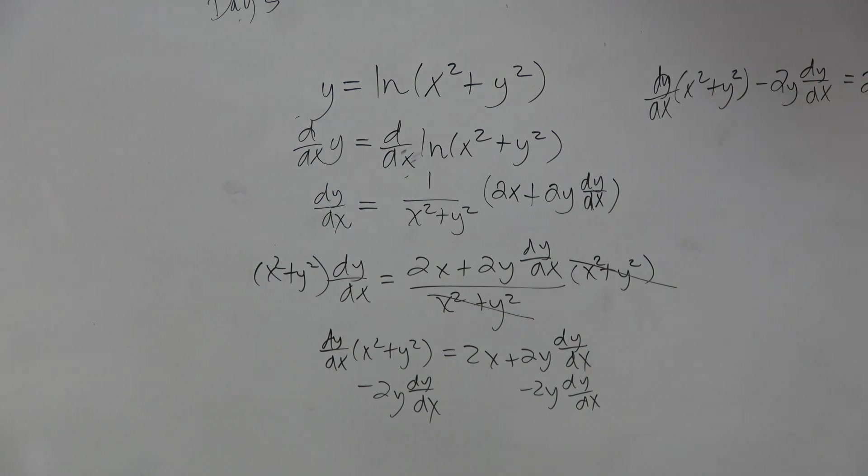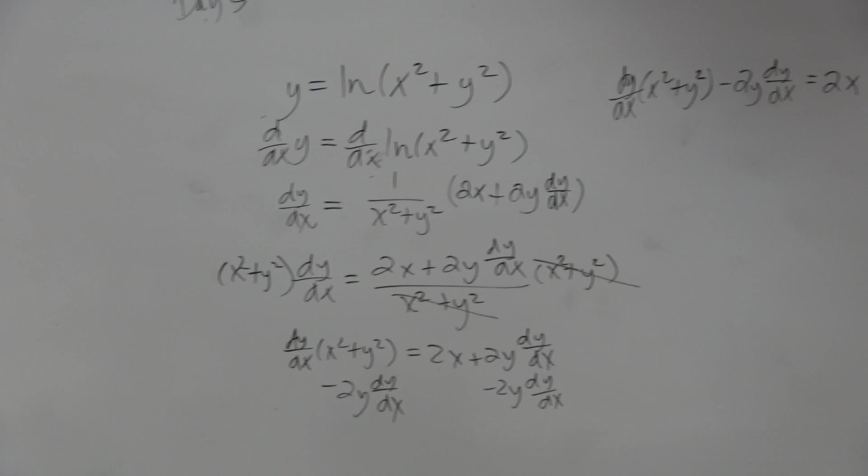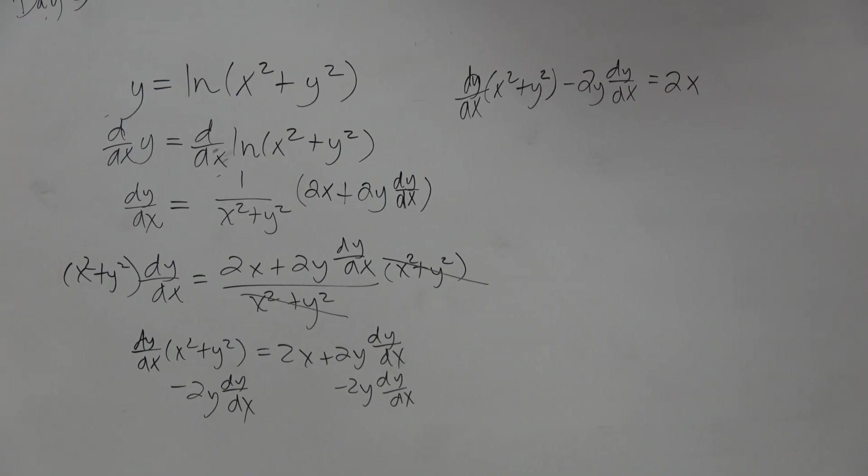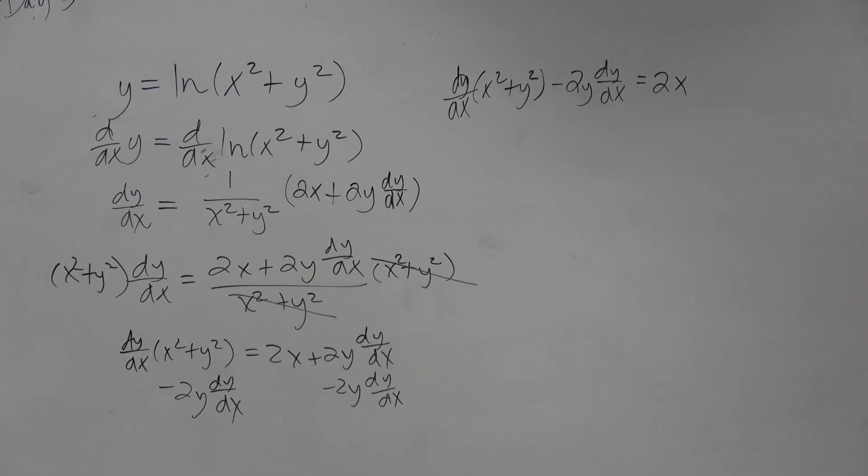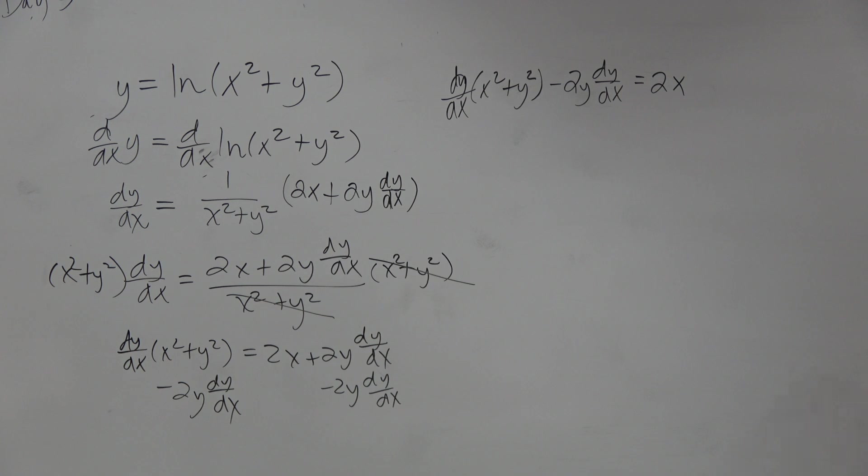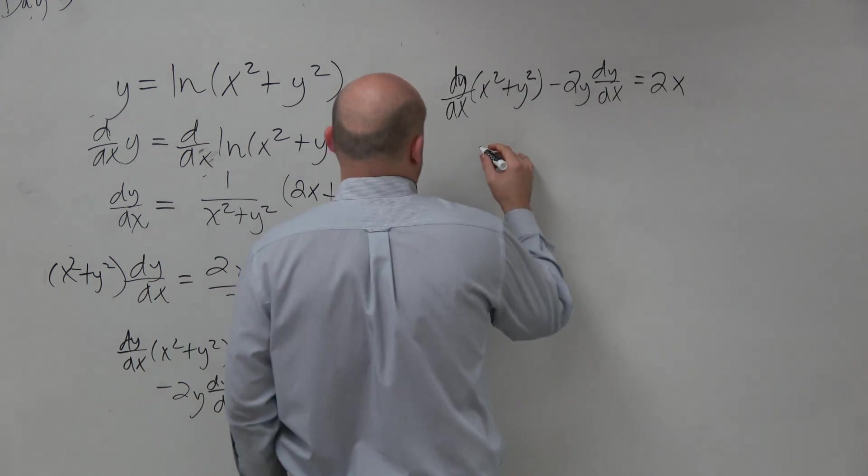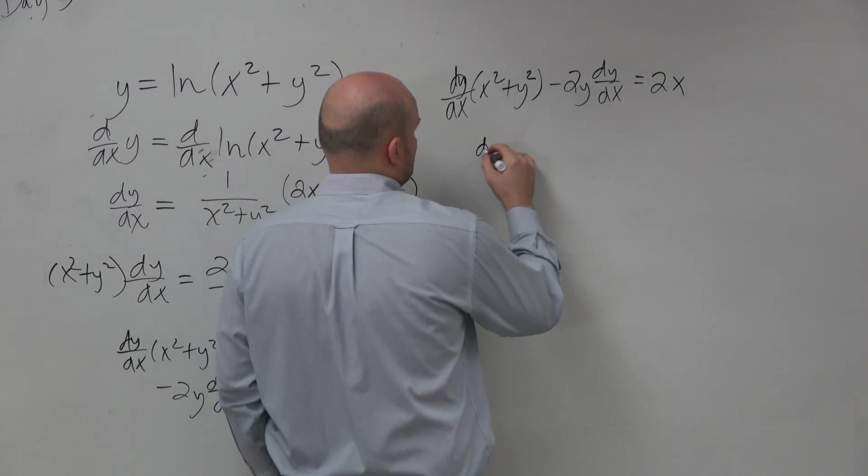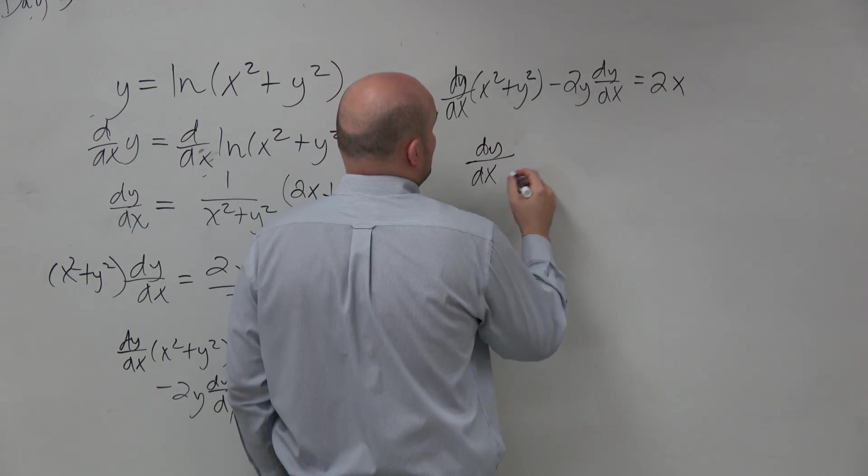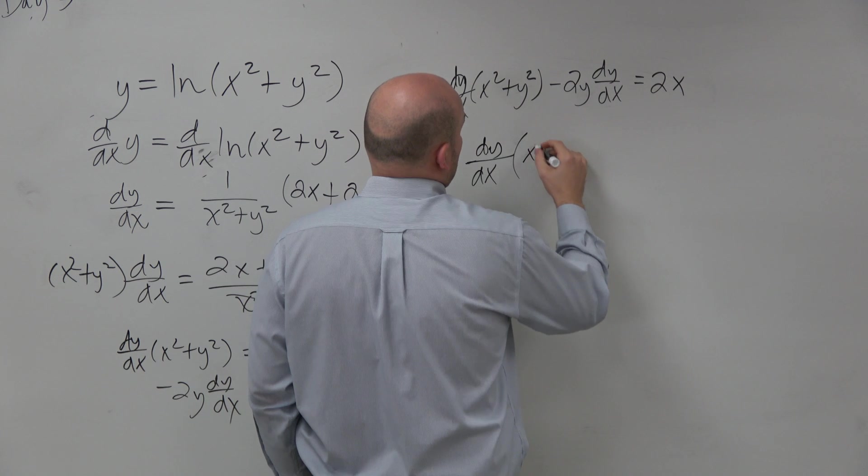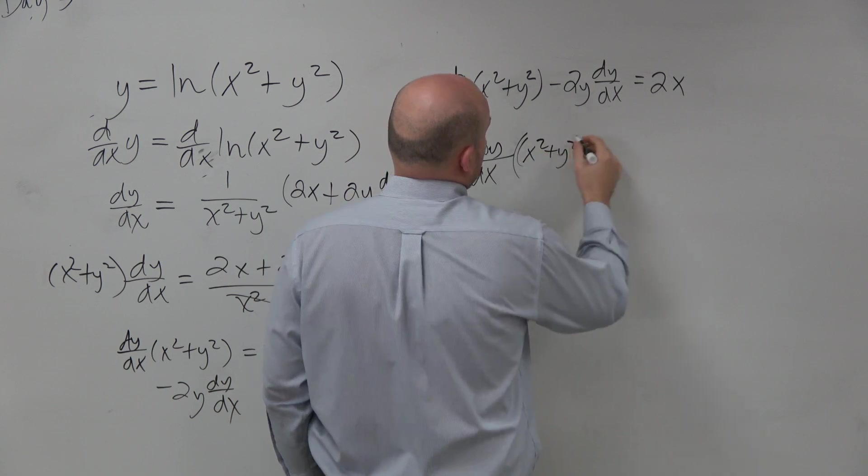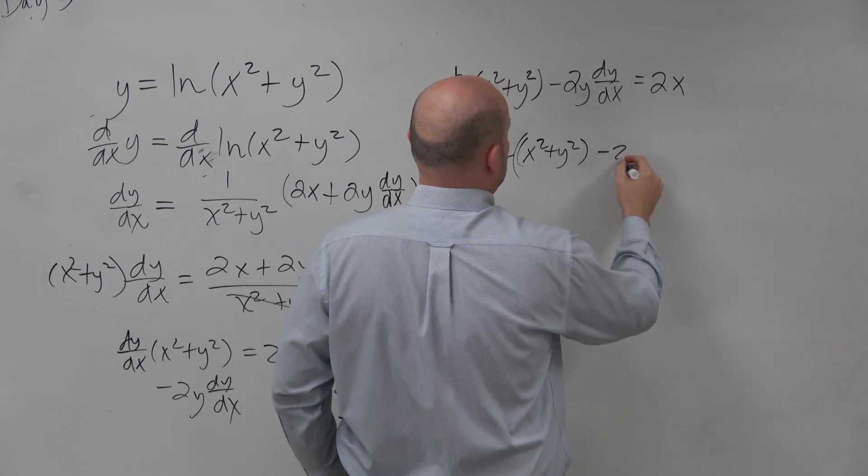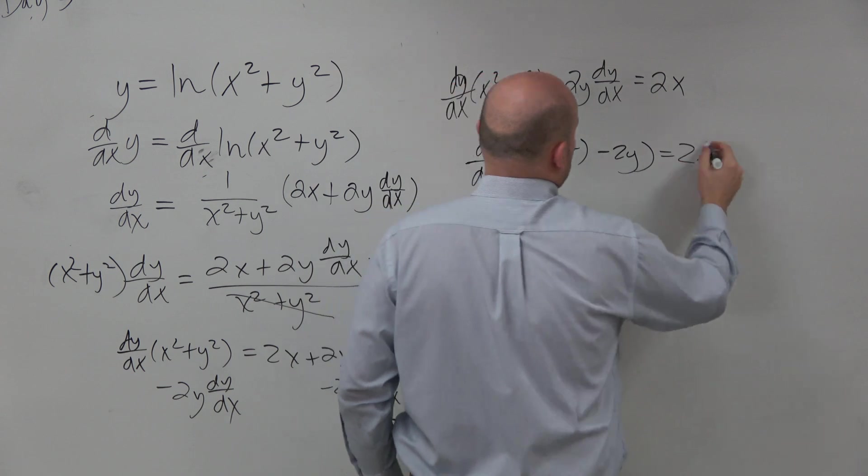Now, it might look a little bit more complicated, but in reality, do we have something that they have in common? On the left side, what do they have in common? dy dx. So I factor out dy dx, and I'm left with x squared plus y squared minus 2y equals 2x.